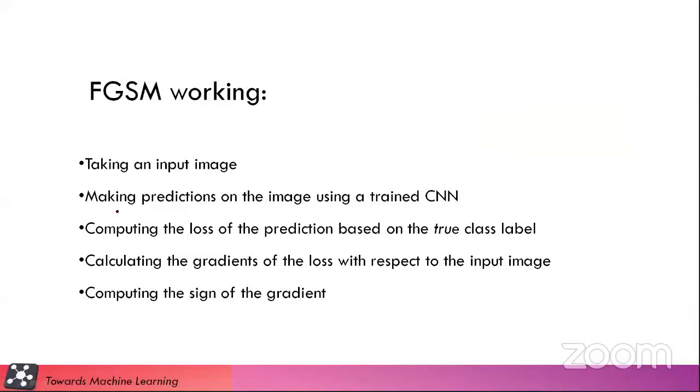So FGSM, I already told you how it works. It takes your input image, it makes the prediction using the CNN, it computes the loss and their gradient, and using the sign of gradient we are going to force the network.